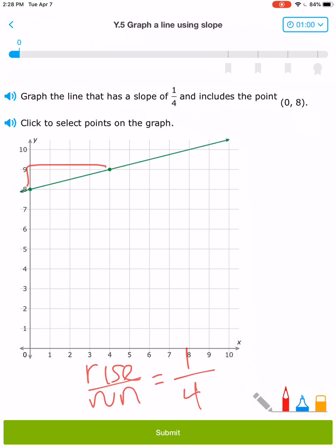With both of my points plotted with a rise of 1 and a run of 4, I can submit my equation.